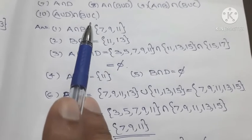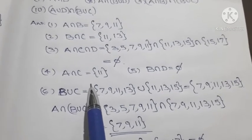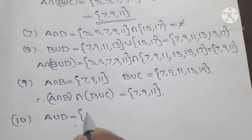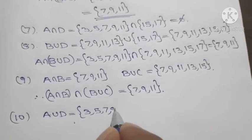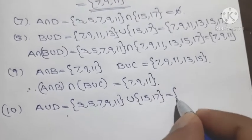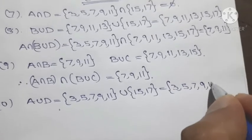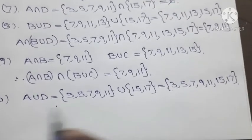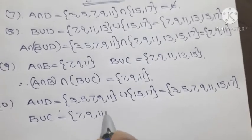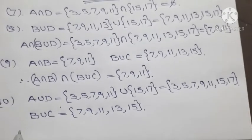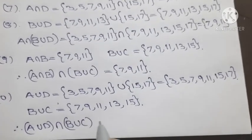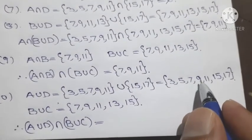A union D: A = {3, 5, 7, 8, 11} union D = {15, 17}, which equals {3, 5, 7, 9, 11, 15, 17}. B union C equals set {7, 9, 11, 13, 15}. Therefore A union D intersection B union C equals {7, 9, 11, 15}.